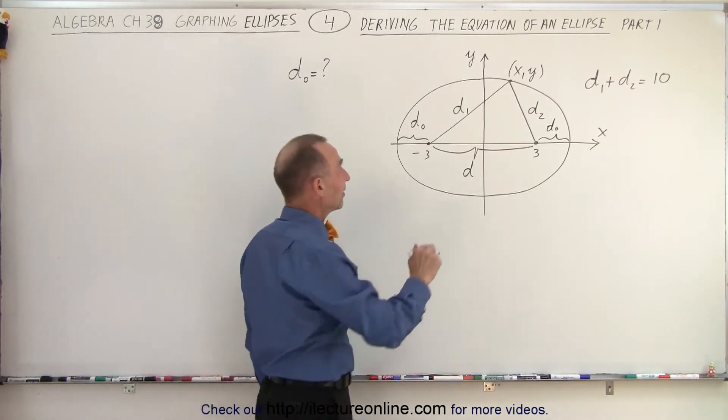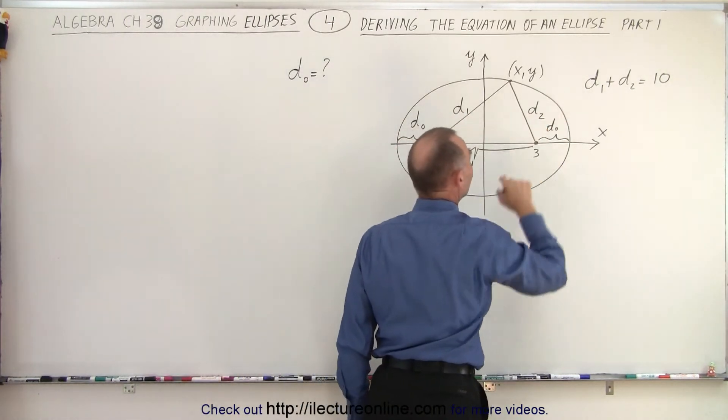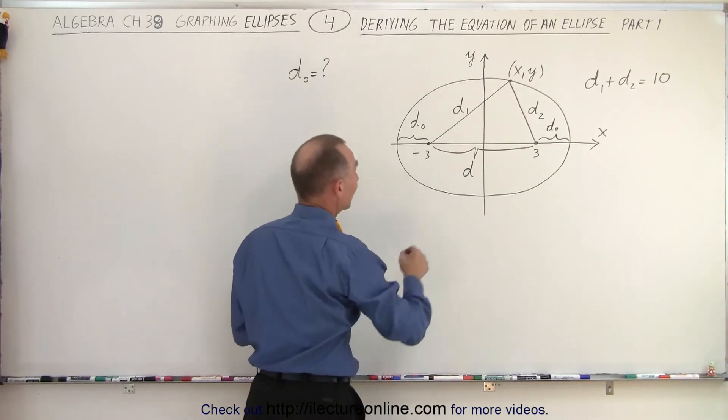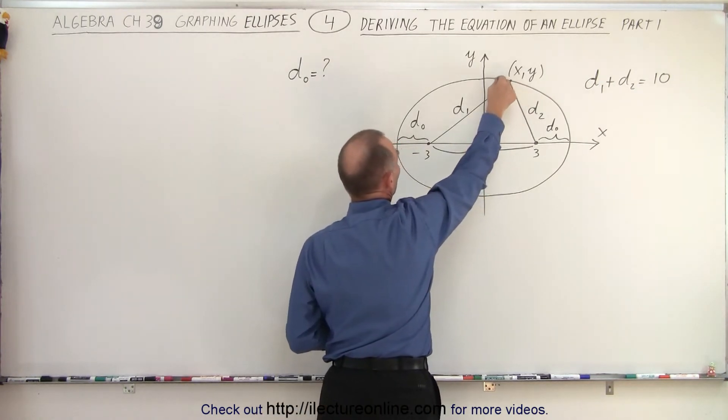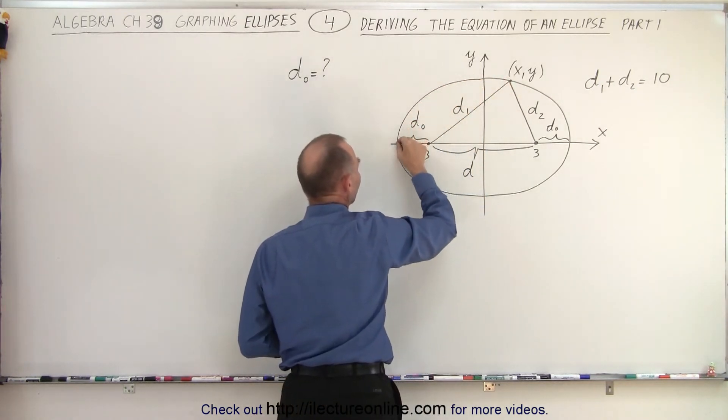Again, the restriction is that d1 plus d2 is equal to 10. Now, if we take the pencil and we bring it all the way over here to the very edge, what the string will then look like, let's draw it.